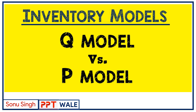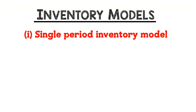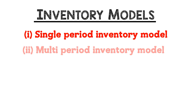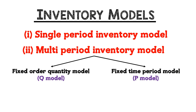There are two types of inventory models: single-period inventory model and multi-period inventory model. In the multi-period inventory model there are further two types: fixed order quantity model and fixed time period model. The fixed order quantity model is called the Q model and the fixed time period model is called the P model.